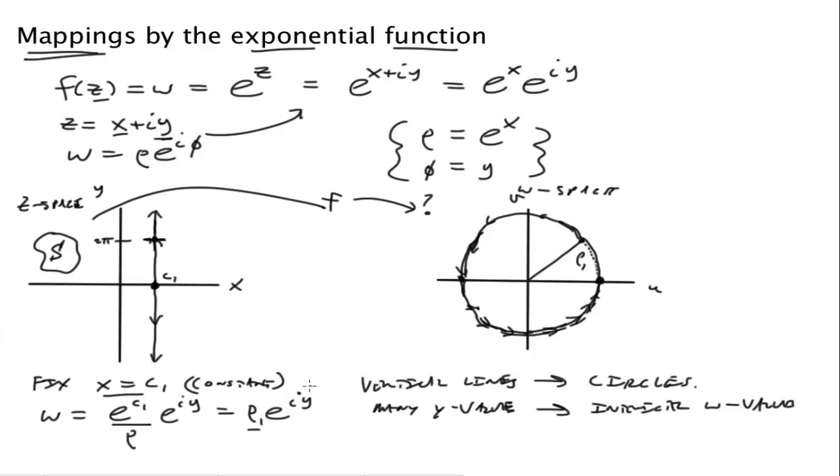Assuming, of course, we fixed our x to be a c1 constant. And of course, the radius of the circle is dependent on x. So what if I take x to be less than 0? If I say x equals 0, I'm talking about the imaginary axis. So if x equals 0, that'll be the circle of radius 1.